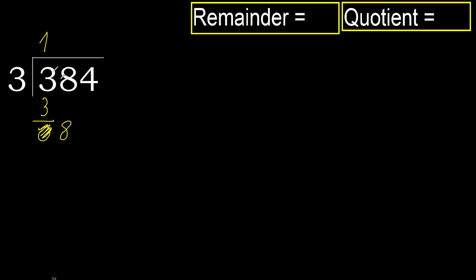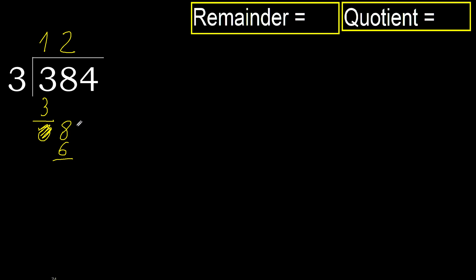8. 3 multiplied by 3 is 9 — 9 is greater. Multiplied by 2: 6 is not greater. Ok, subtract. Next.